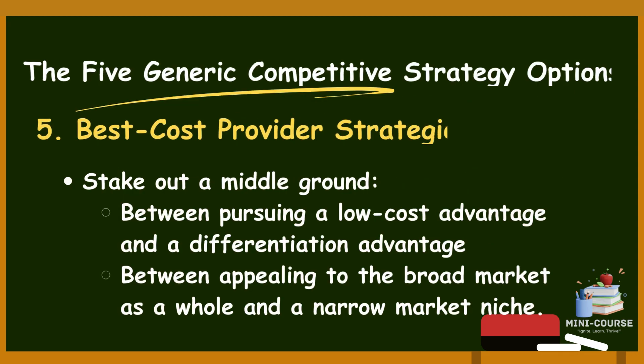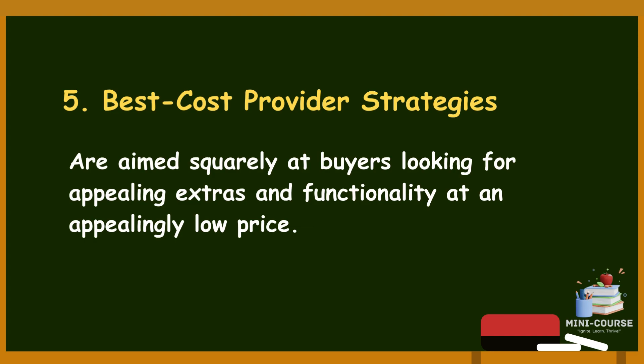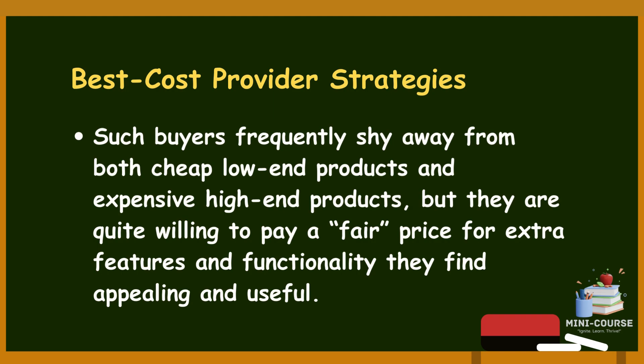Number five is best cost provider strategies, which stake out a middle ground between pursuing a low-cost advantage and a differentiation advantage, and between appealing to the broad market and a narrow market niche. This allows a company to aim squarely at the sizable mass of middle-market buyers looking for a good-to-very-good product or service at an economical price — buyers who frequently shy away from both cheap low-end products and expensive high-end products, but are quite willing to pay a fair price for extra features and functionality they find appealing and useful.